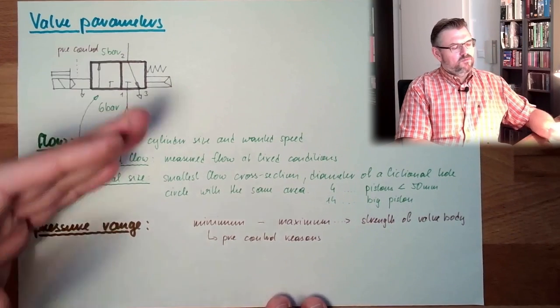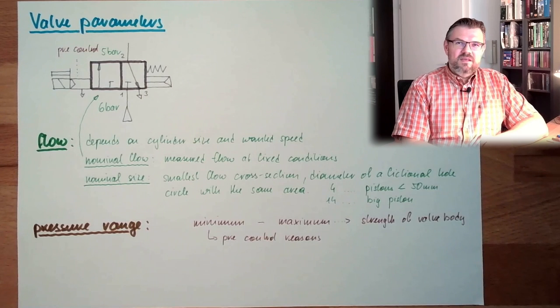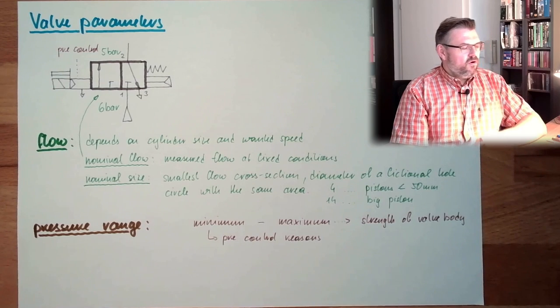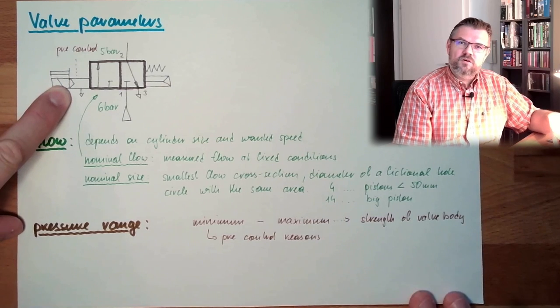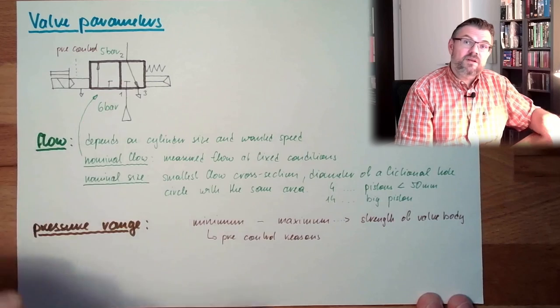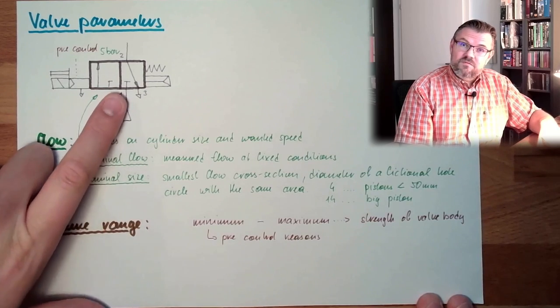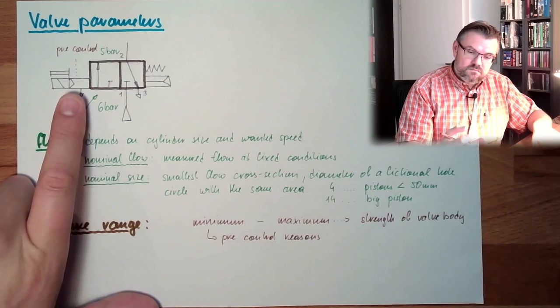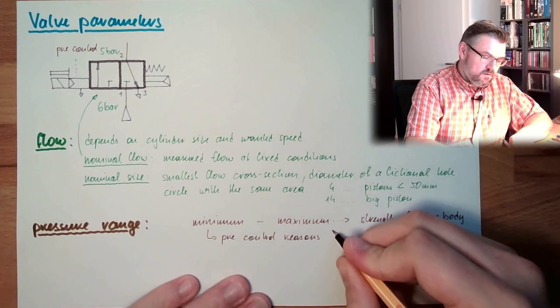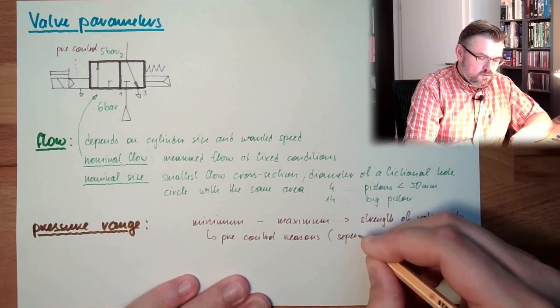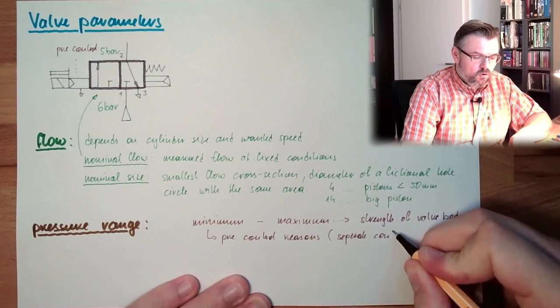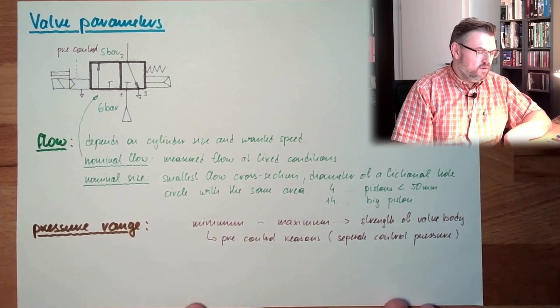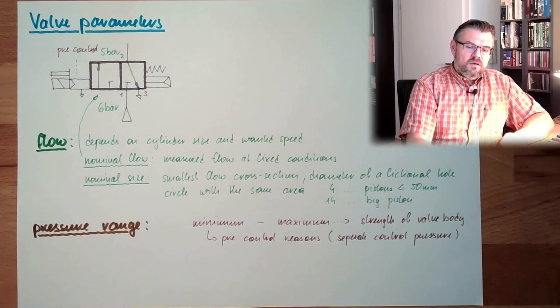But what if I want to control with a pre-control valve something which really does not need a lot of pressure, must not have a lot of pressure, what then? I'm at the end of the line, or what? No. There are also valves which do have a separate pre-control pressure connector. If the operating pressure, where the pre-control pressure is usually taken off, is not sufficient to meet your minimum pressure, then you need to select a valve with a separate pre-control pressure. So, separate pre-control pressure might be the solution, then, in your application.